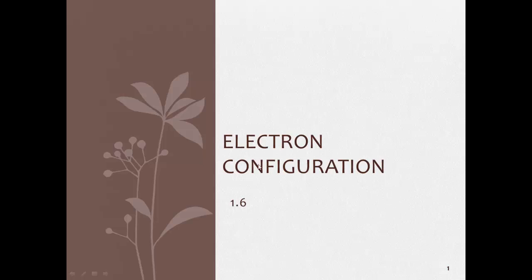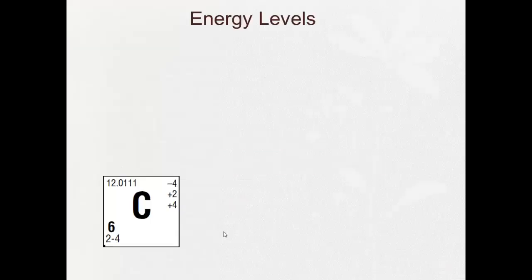Hi guys, welcome to our video 1.6, Electron Configuration. So far we've been taking a look at what's going on in the nucleus. Now we're going to take a closer look at electrons. You know already that electrons are in shells, and different shells are different energy levels that contain different amounts of electrons. So now we're going to learn how we actually figure that out.